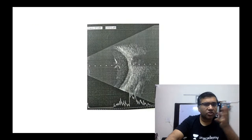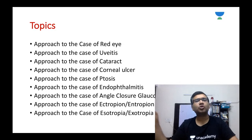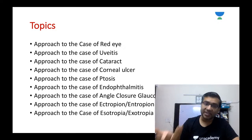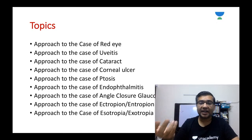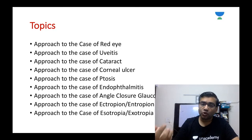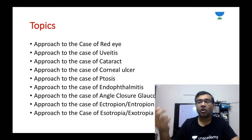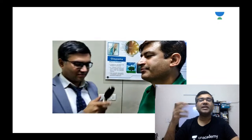We will also cover how to interpret the Snellen's chart and various tests of binocularity and stereoscopy. Topic-wise discussions will include: approach to a case of red eye — whether it is conjunctivitis or uveitis, and which type — as well as topics like uveitis, cataract, corneal ulcers, ptosis, endophthalmitis, angle closure glaucoma, ectropion, entropion, and esotropia. We will also put videos showing how to examine the patient, such as this video where I am performing direct ophthalmoscopy.